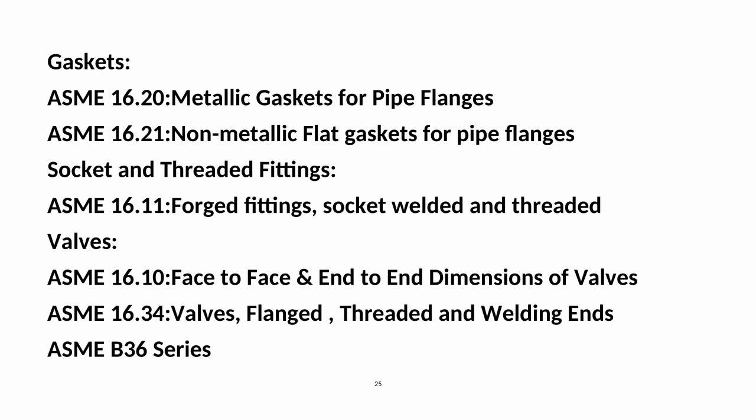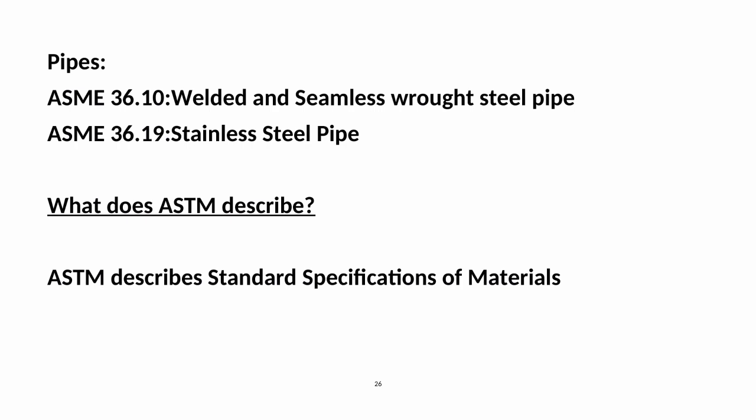Butt Welded Fittings: ASME B16.9 — Butt Welded Fittings; ASME B16.28 — Butt Welding Short Radius Elbows and Return Bends. Gaskets: ASME B16.20 — Metallic Gaskets for Pipe Flanges; ASME B16.21 — Non-Metallic Flat Gaskets for Pipe Flanges. Socket and Threaded Fittings: ASME B16.11 — Forged Fittings, Socket Welded and Threaded. Valves: ASME B16.10 — Face-to-Face and End-to-End Dimensions of Valves; ASME B16.34 — Valves, Flanged, Threaded and Welding Ends. ASME B36 Series — Pipes: ASME B36.10 — Welded and Seamless Wrought Steel Pipe; ASME B36.19 — Stainless Steel Pipe. ASTM describes standard specifications of materials.